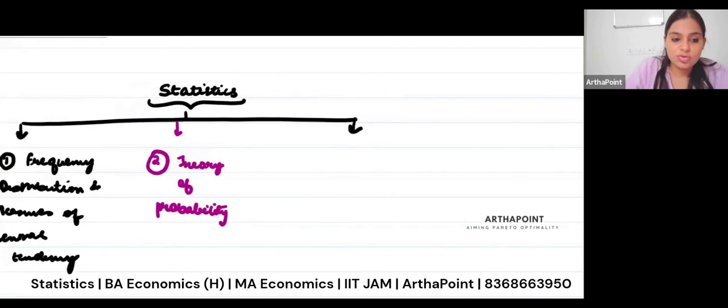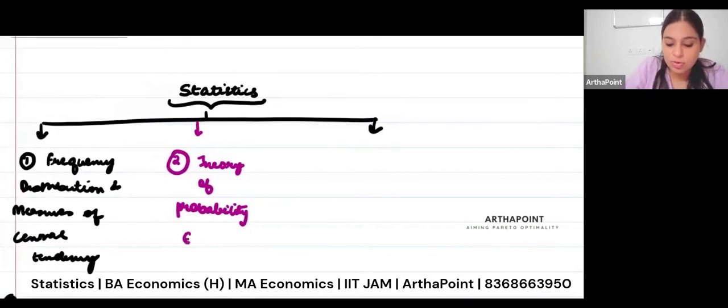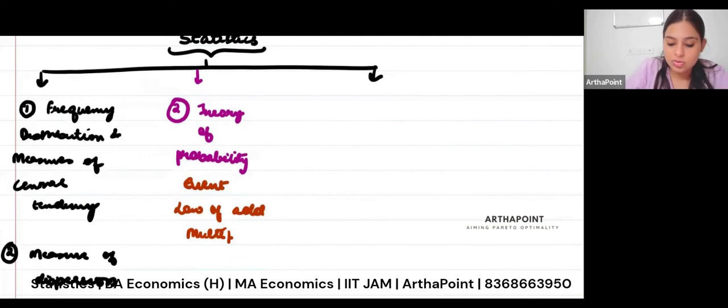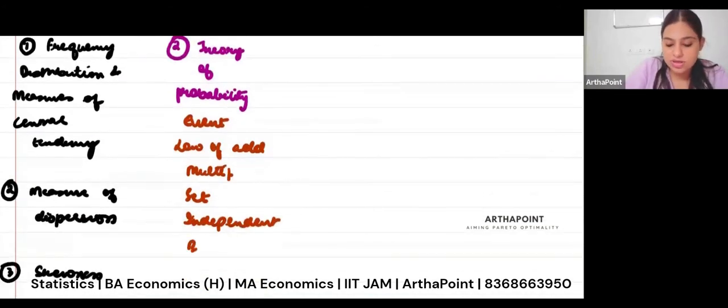So here you may want to go ahead and write down, we will talk about what is an event and we'll do this in detail, don't worry. What is the law of addition of probability? What is the multiplicative law? Then we will talk about the entire set theory linked to probability. What are the independent events? What happens when we have independent events? What is Bayes' theorem?